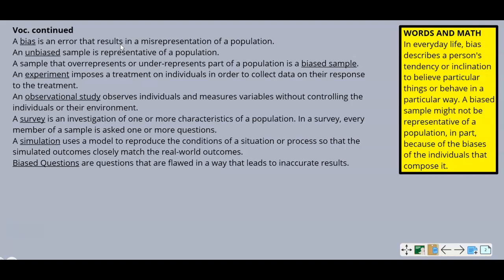An experiment imposes a treatment on individuals in order to collect data on the response to the treatment. An observational study observes individuals and measures variables without controlling the individuals or the environment — so in an observational study, you observe only. A survey is an investigation of one or more characteristics of a population; every member of a sample is asked one or more questions.